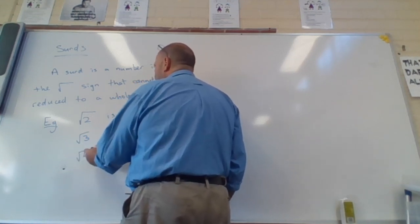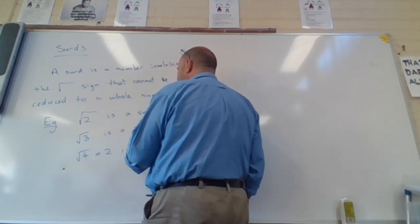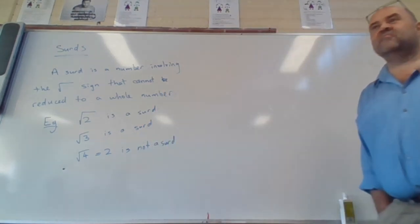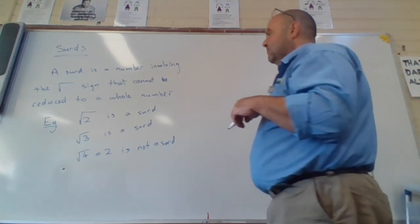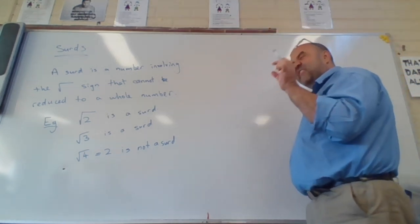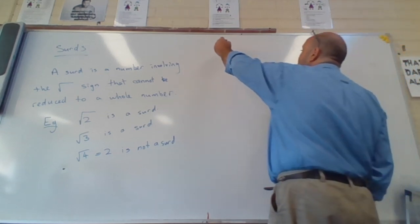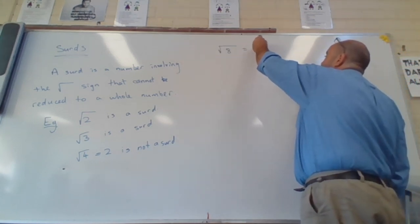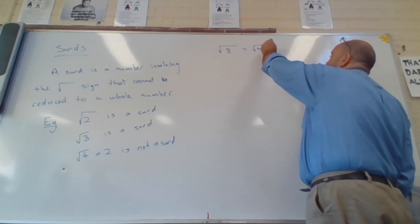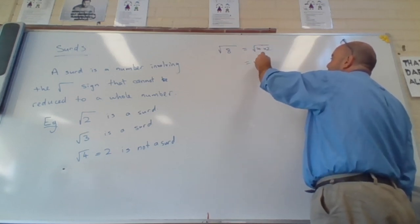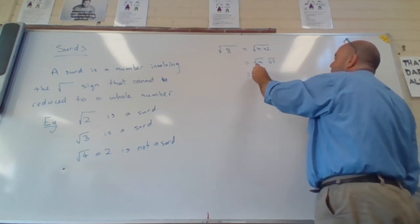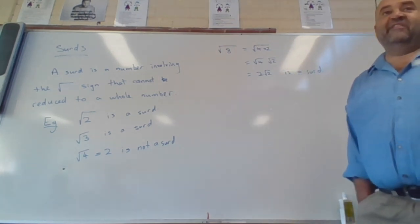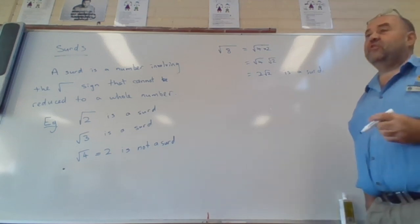Root four, which equals two, is not a surd. Continuing, if I talk about root eight, well root eight is equal to the square root of four times two, which is the square root of four times the square root of two, which is two root two. This is a surd because it involves the square root sign and cannot be simplified to a whole number.